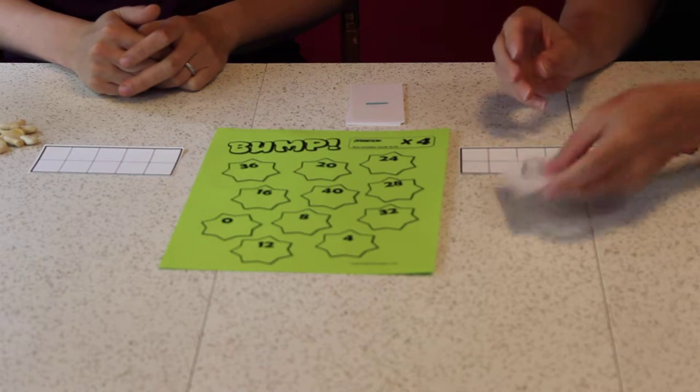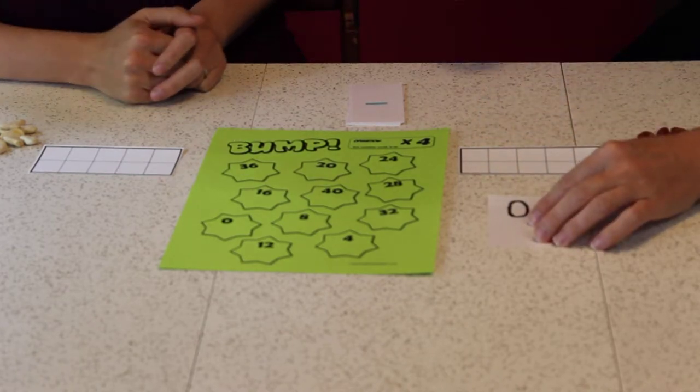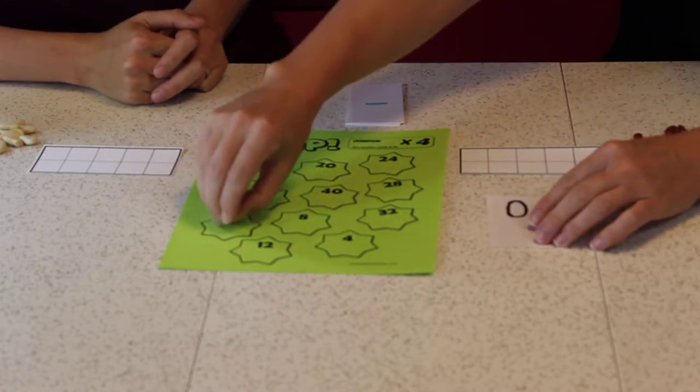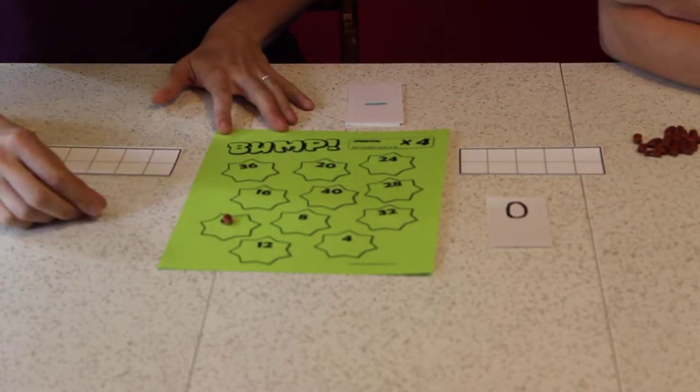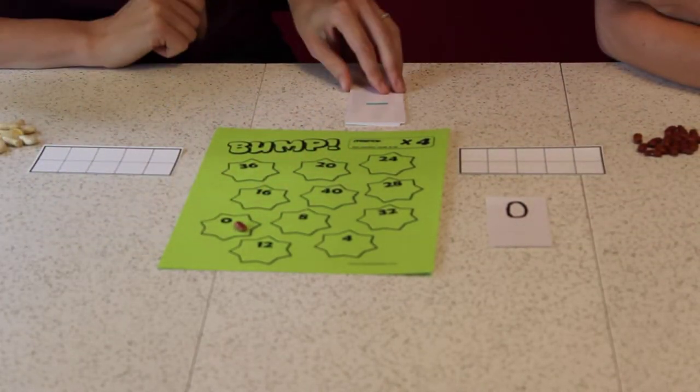Let's see, I drew a zero. So I'm gonna say zero times four is zero. And I'm gonna put my kidney bean right there. You're not gonna put it right on the number? No, I would cover it up that way, and I wouldn't be able to see it again. That's good.